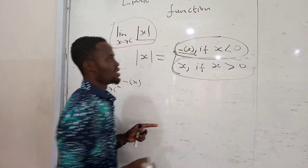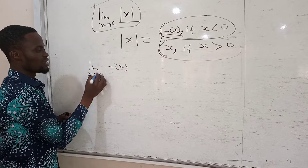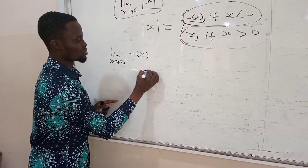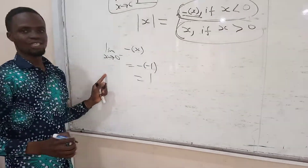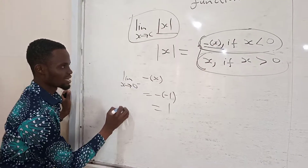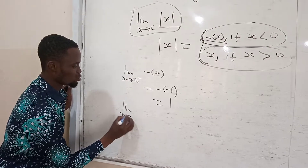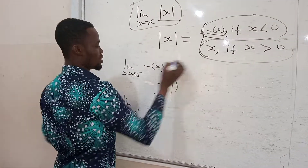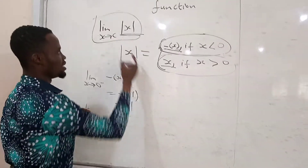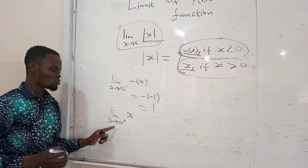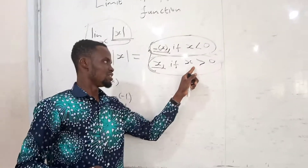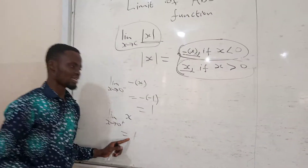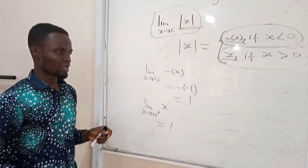Suppose my c is zero. It means I'm going to choose a number less than c. Since c is zero, I choose negative one. When I put negative one in, I get negative of negative one, which equals one — that is the left-hand side. For the right-hand side, I choose a number greater than zero, say one. I get one. Since the left-hand side equals the right-hand side, the limit does exist.